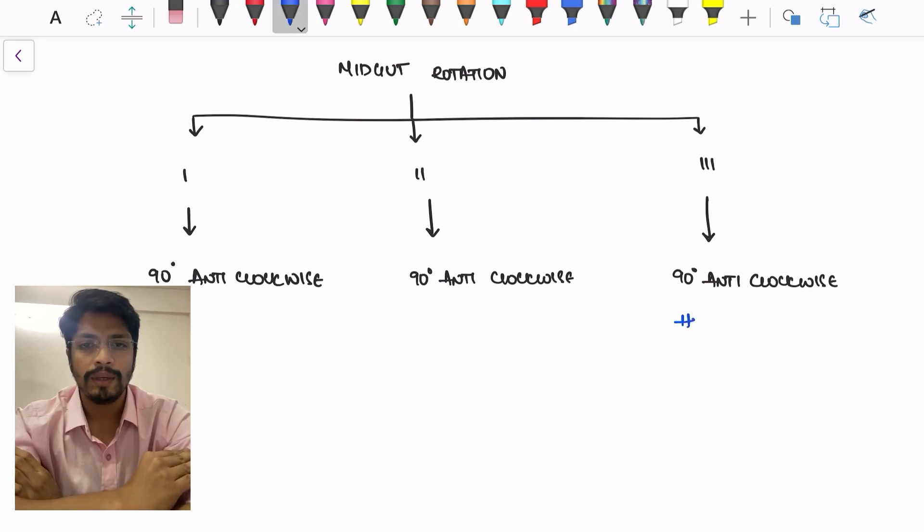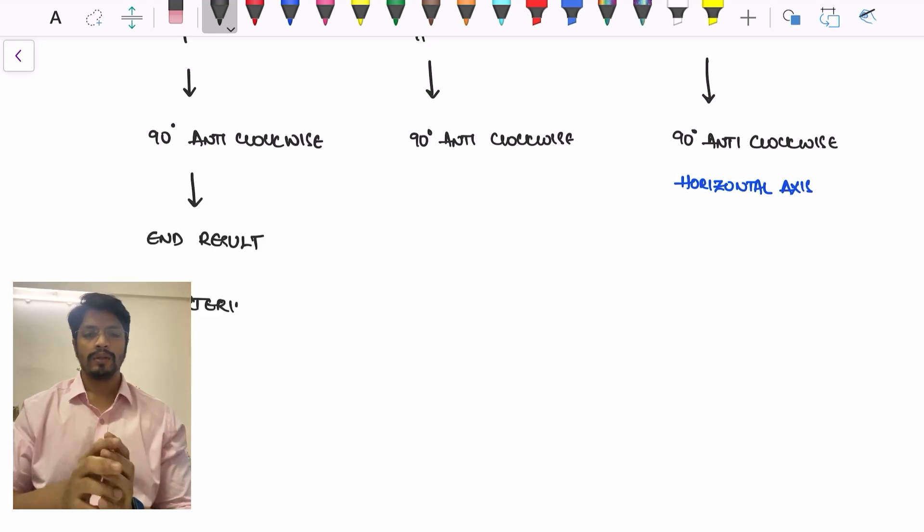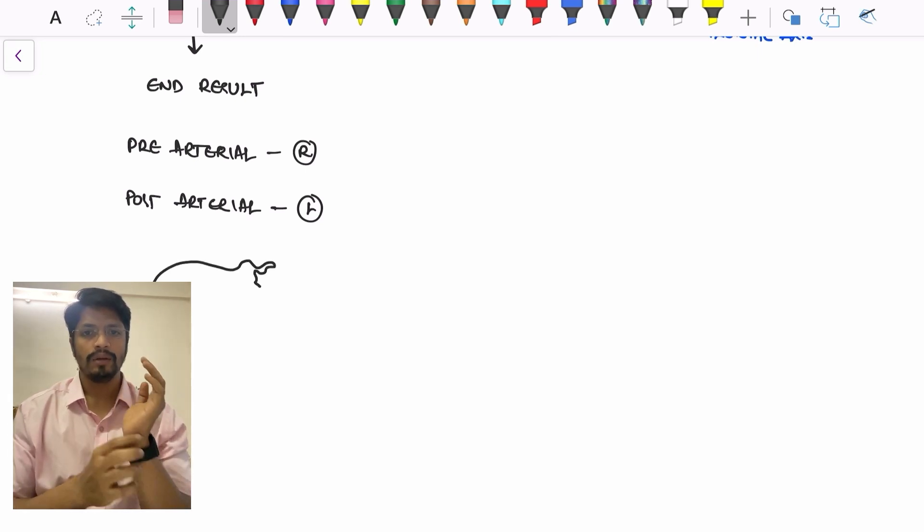First two will be in a vertical axis, whereas the last 90 degrees will be in a horizontal axis. The rotation of midgut is to be understood in a very visual manner, so I will give you a small demo. Consider this as the pre-arterial segment. This is the post-arterial segment, and this is the cecal bud.